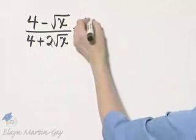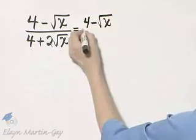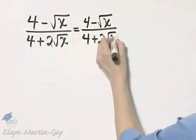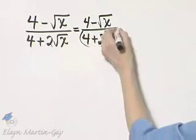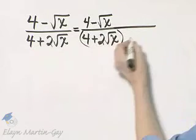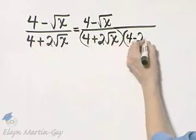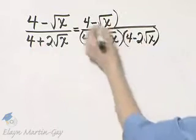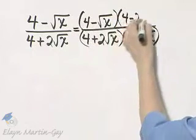Let me rewrite this. I have 4 minus square root of x over 4 plus 2 square root of x. The conjugate of the denominator is 4 minus 2 square root of x. So I multiply by 4 minus 2 square root of x in the denominator and the exact same thing in the numerator.